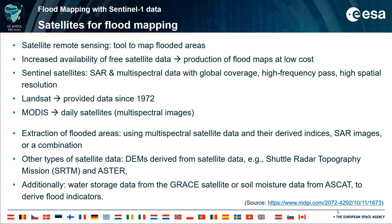Extraction of flooded areas can be performed using multispectral satellite data and their derived indices, SAR images, or a combination of both. Other types of satellite data can also be used to improve flood mapping — for instance, digital elevation models derived from satellite data, or the Shuttle Radar Topography Mission (SRTM), can be used to estimate flood-prone areas or to improve SAR or multispectral-based maps. In addition, water storage data from the GRACE satellite or soil moisture data from ASCAT can be used to derive flood indicators. Each remote sensing technique for flood mapping presents both advantages and drawbacks, and must be evaluated on a case-by-case basis.